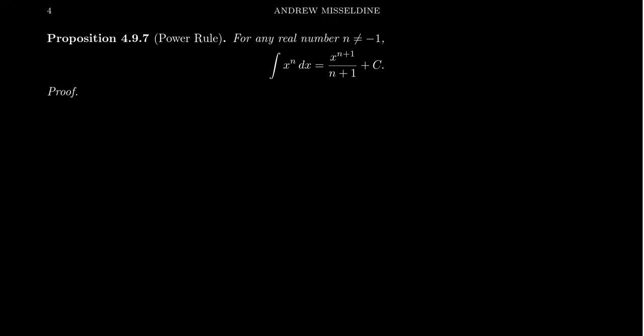Let's look at some examples of computing anti-derivatives. Anti-derivatives is reversing the derivative process. When we have a derivative problem, we're given a function and have to find its derivative. Anti-derivatives mean we are given the derivative — what's the function?